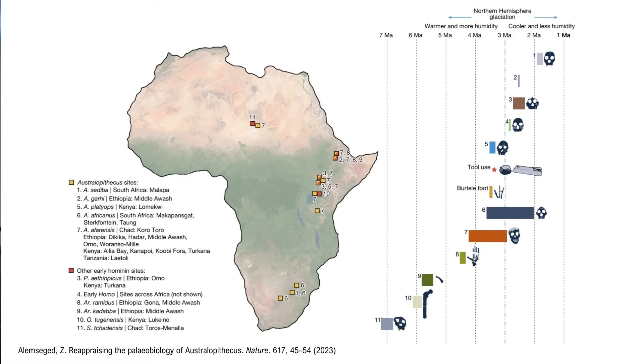Today, we know that Australopithecus, which contained multiple species, was a pan-African genus spanning geographically from Chad to Ethiopia, Kenya, Tanzania, all the way down to South Africa. Australopithecus, which lived from 4.2 to 2 million years ago, practiced both habitual bipedality and arboreality. This allowed Australopithecus to successfully exploit diverse habitats and food resources.